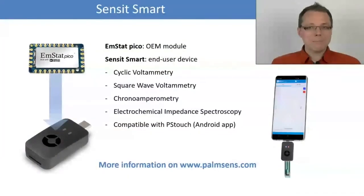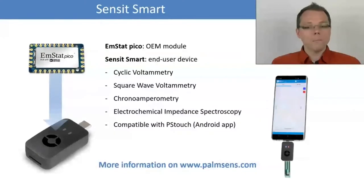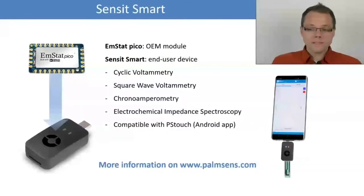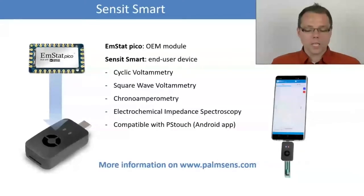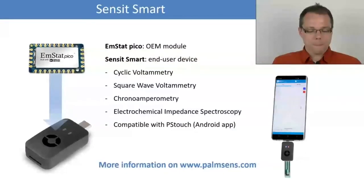Just to give you a short idea of what that little black box is — the Sensate Smart is a very small potentiostat based on the EmStat Pico, which is an OEM module. That means it's a small potentiostat you can build into your own devices. In this case we built it into our own device, the Sensate Smart, an end-user device that performs the usual electrochemical techniques: cyclic voltammetry, square wave voltammetry, chronoamperometry, and electrochemical impedance spectroscopy. It is compatible with PS Touch for Android.